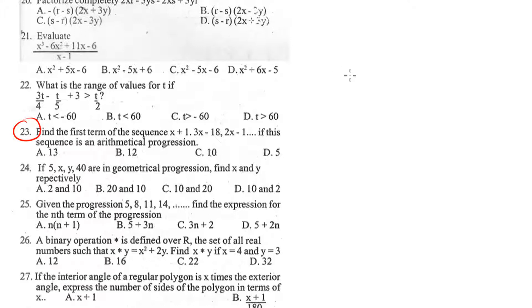Our next question here, we are told that the first term of the sequence x plus 1, 3x minus 18, 2x minus 1, the sequence is an arithmetic progression.